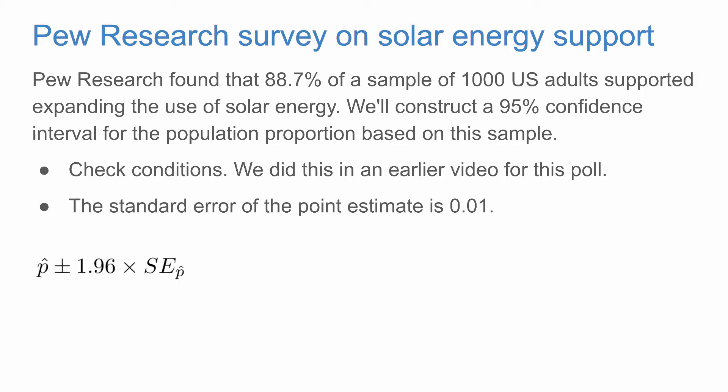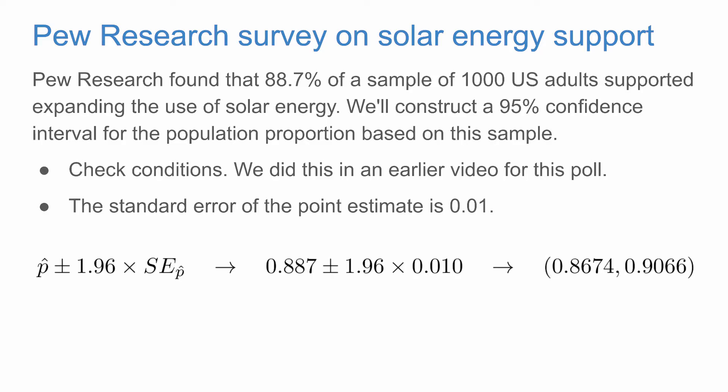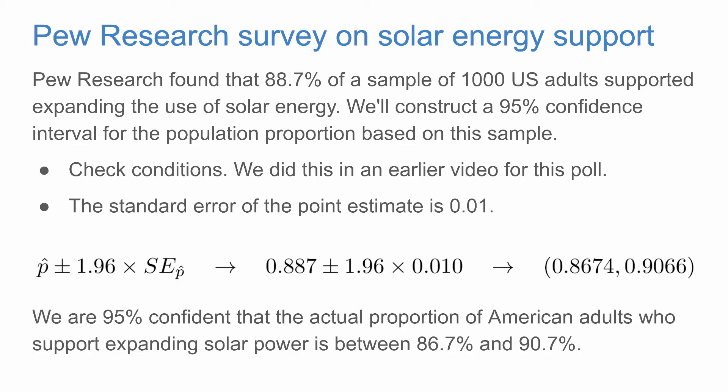Next, let's construct our confidence interval. We have our sample proportion plus minus 1.96 times the standard error. Plugging in our values, 0.887 plus minus 1.96 times 0.01. This gives us a confidence interval of 0.8674 to 0.9066. We interpret this as: we are 95% confident that the actual proportion of American adults who support expanding solar power is between 86.7% and 90.7%.